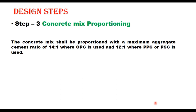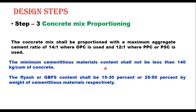Once proportions are obtained, the third step is concrete mix design. The concrete mix shall be proportioned with a maximum aggregate-to-cement ratio of 14:1 where OPC is used, and 12:1 when PPC or PSC is used. The minimum cementitious material content shall not be less than 140 kg per cubic meter of concrete. Fly ash or GGBFS content shall be 15–30 percent or 25–50 percent by weight of cementitious materials respectively.